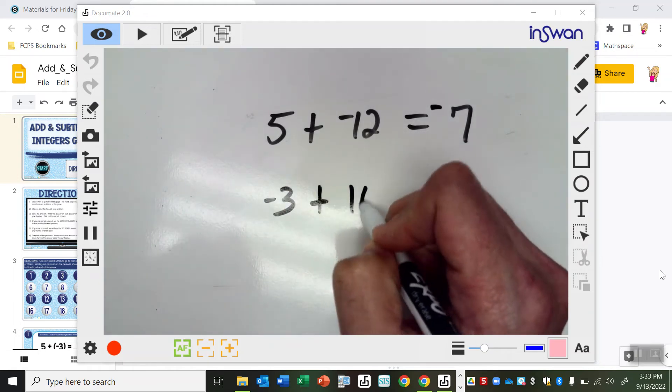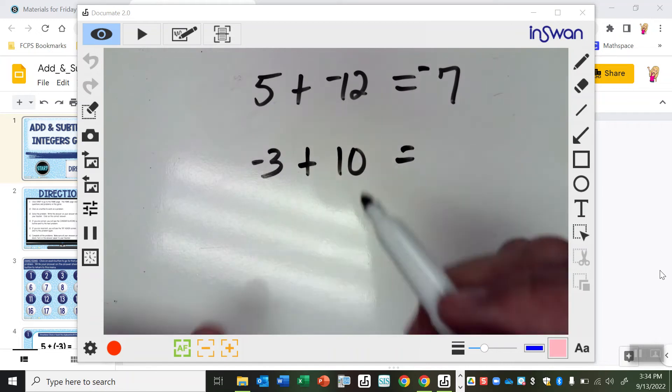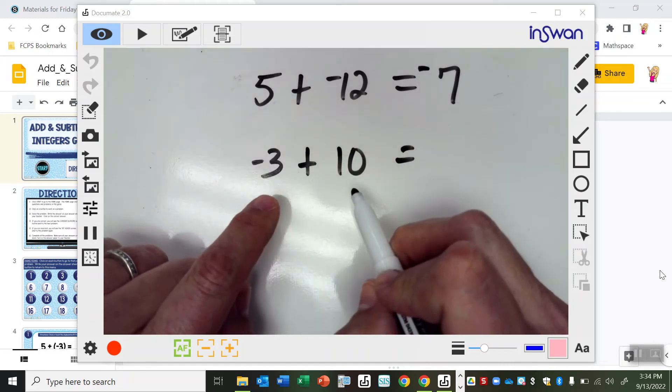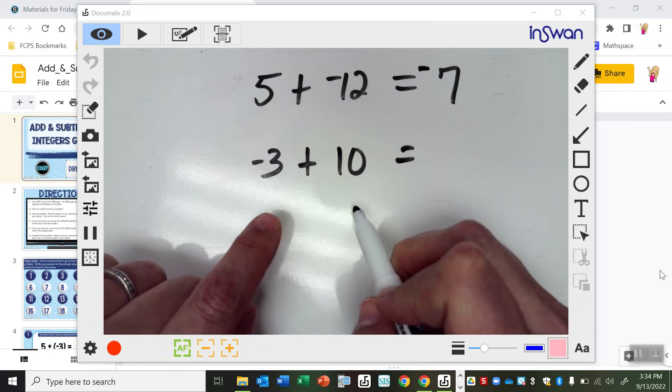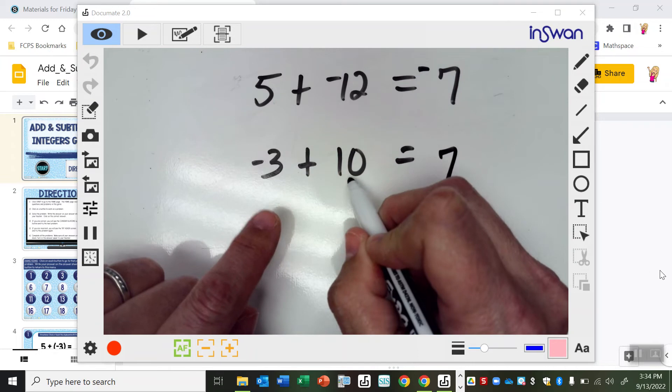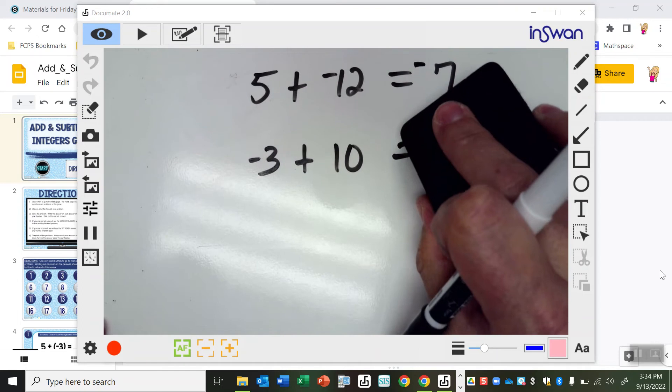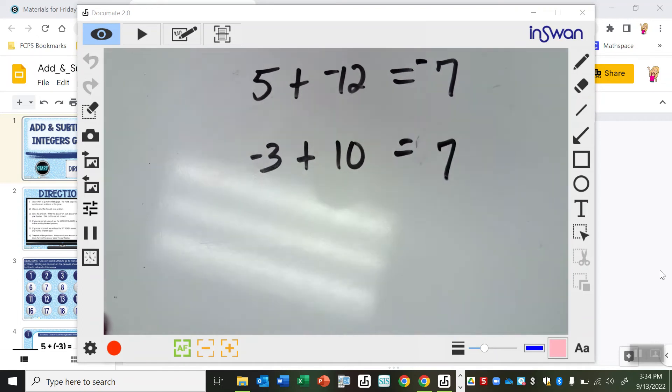So let's do like negative 3 plus 10. All right, so these are different, different signs I'm adding. So I basically say to myself, let me subtract them. 10 and 3, they subtract to 7. And which one's bigger? 10 is bigger than 3. So I'm going to keep that positive from the 10.